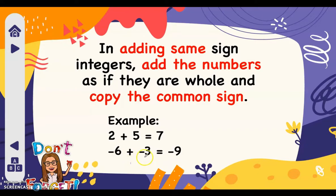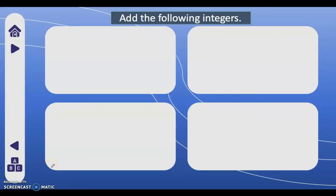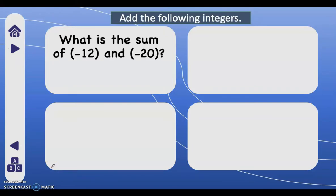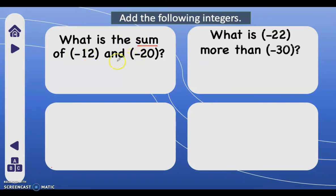Six plus three is nine, then copy the common sign — the common sign is negative, so we write negative nine. Let's have more examples. What is the sum of negative 12 and negative 20? Sum is the answer in addition. Add 12 plus 20, that is 32, then copy the common sign which is negative, therefore the answer is negative 32.